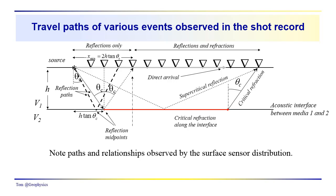We've quantified these ray paths for an important reason: we don't see the ray paths when we collect data. We see what's called a time-distance plot. We have distance out along the surface — the source-receiver distance — and travel time on the axes. The different events we've identified — the reflection event, the direct arrival, the critical refraction, and so on — appear differently in the time-distance, or TX, plot.